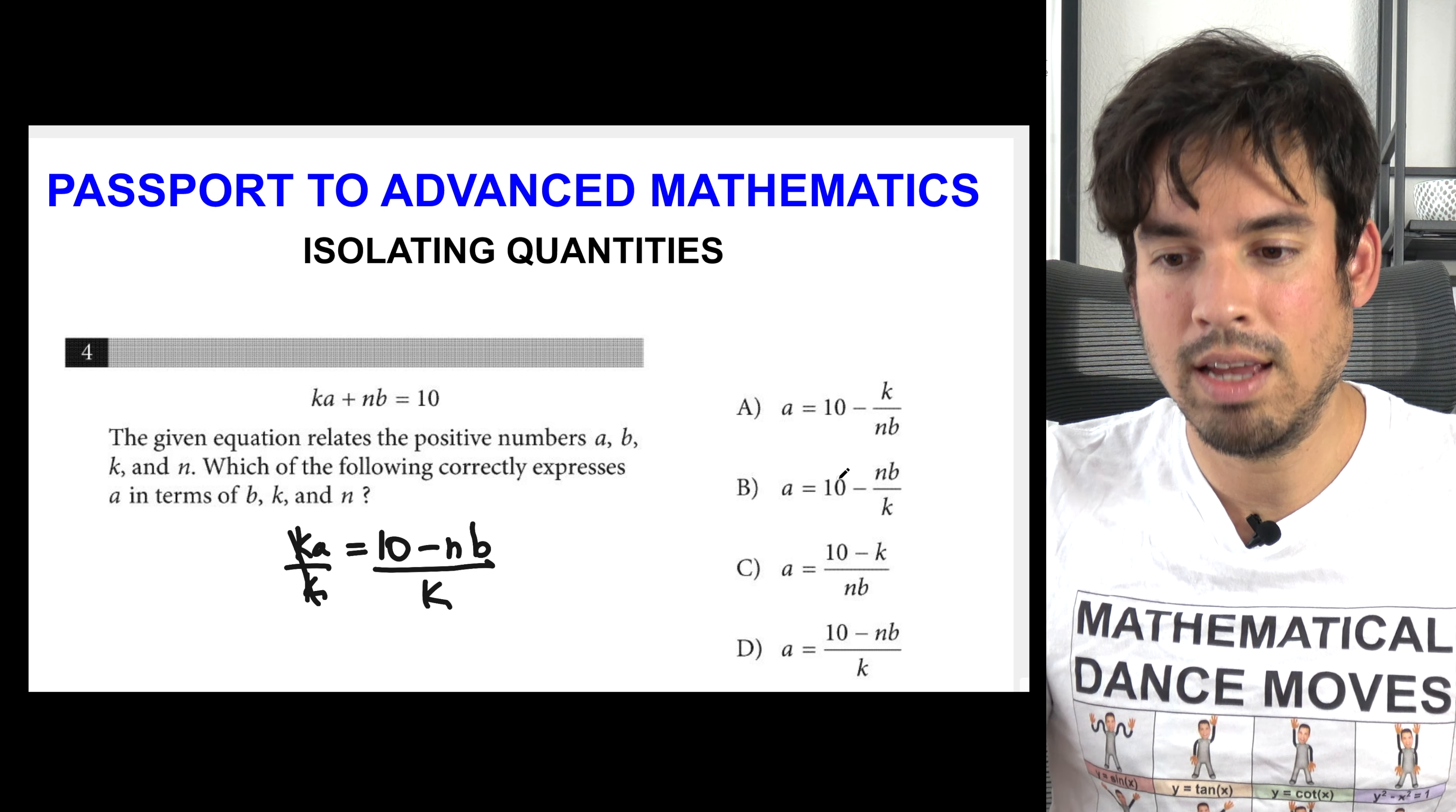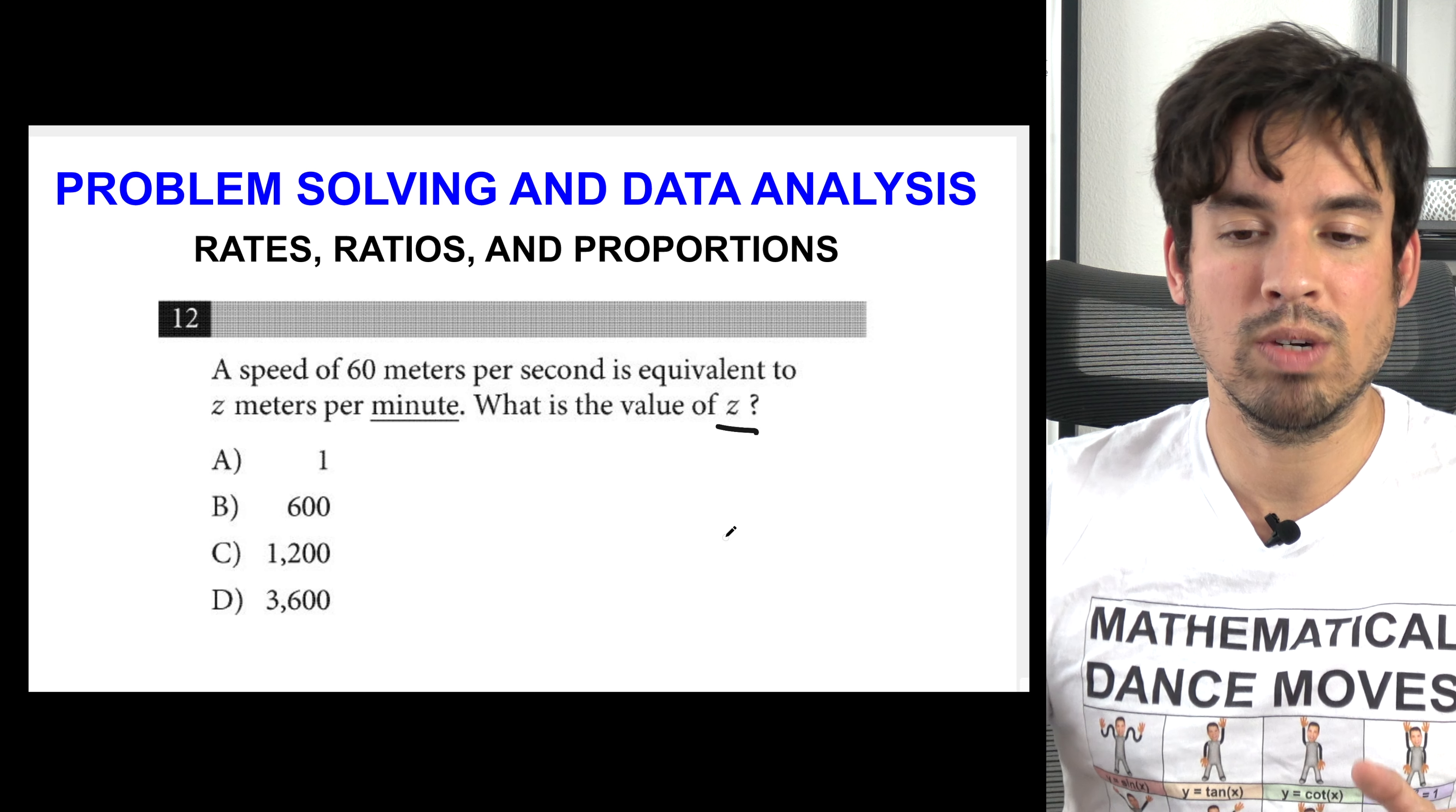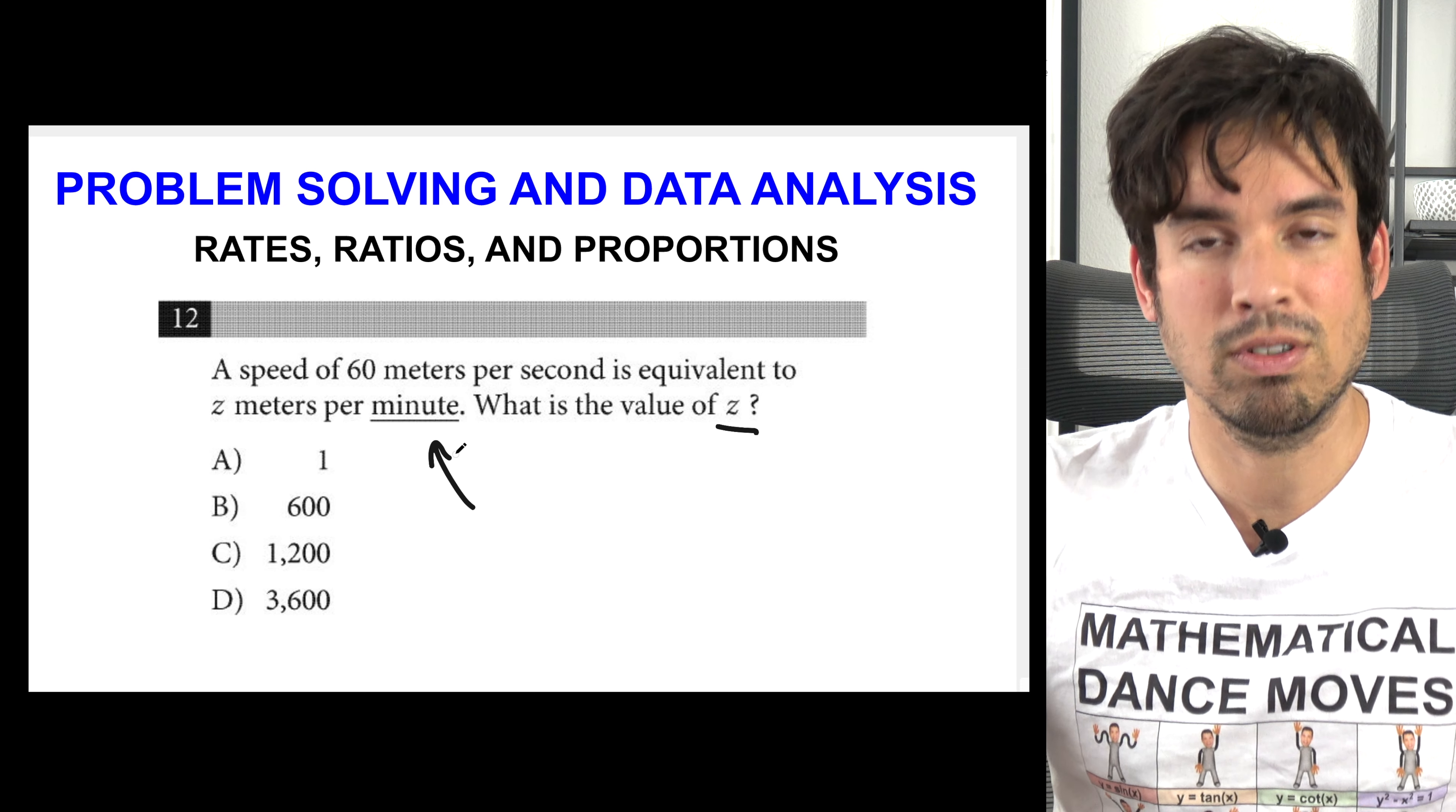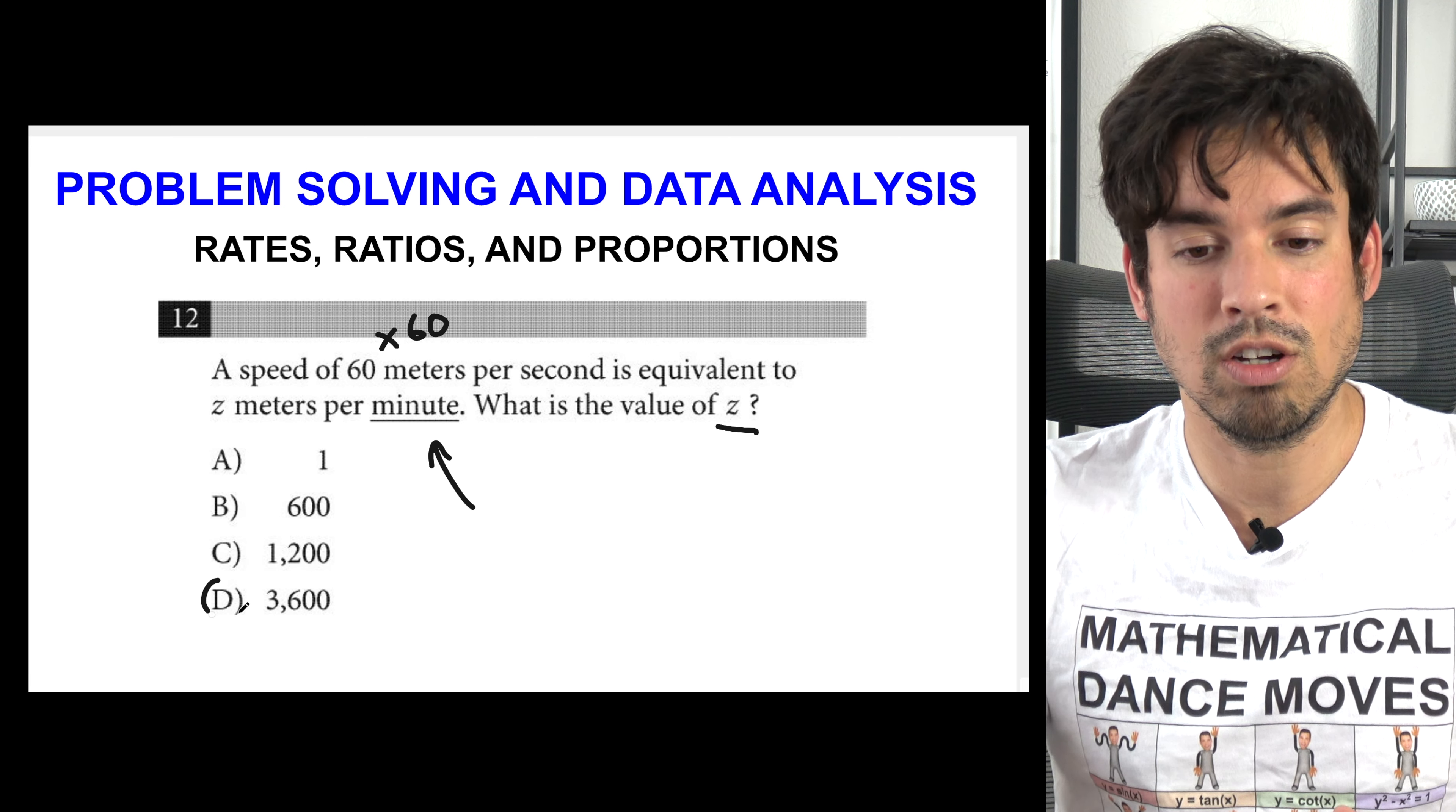This one says a speed of 60 meters per second is equivalent to z meters per minute. What is the value of z? The reason why I point this one out is the College Board doesn't have to do this. They don't have to underline the fact that they're changing the units from second to minute, but they do because they're trying to help you see that difference and make the correct calculation. Since we know that there's 60 seconds in one minute, all I got to do is multiply this guy by 60 to get it into the appropriate time unit. 60 times 60 is 3600 and that's it.